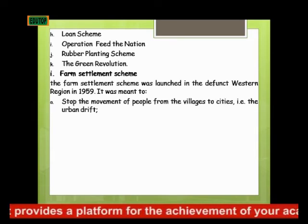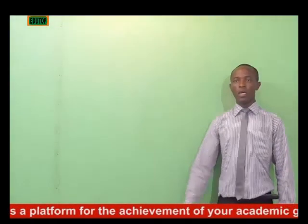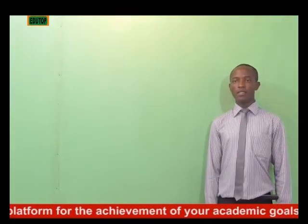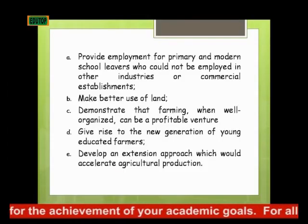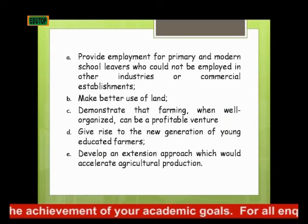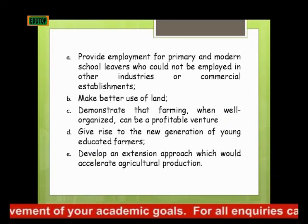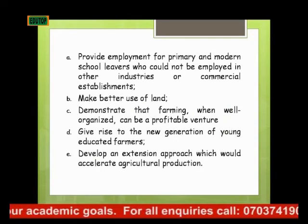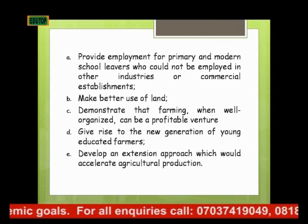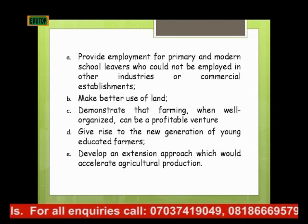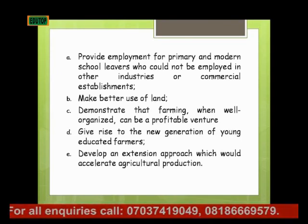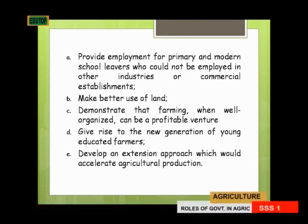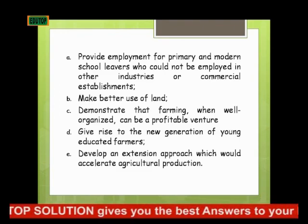The Farm Settlement Scheme was aimed at addressing the issue of people moving from rural areas to urban centers. It was also designed to provide employment for primary and modern school leavers who could not be employed in other industries or commercial establishments — serving as a means of generating employment for graduates from primary school and modern school.